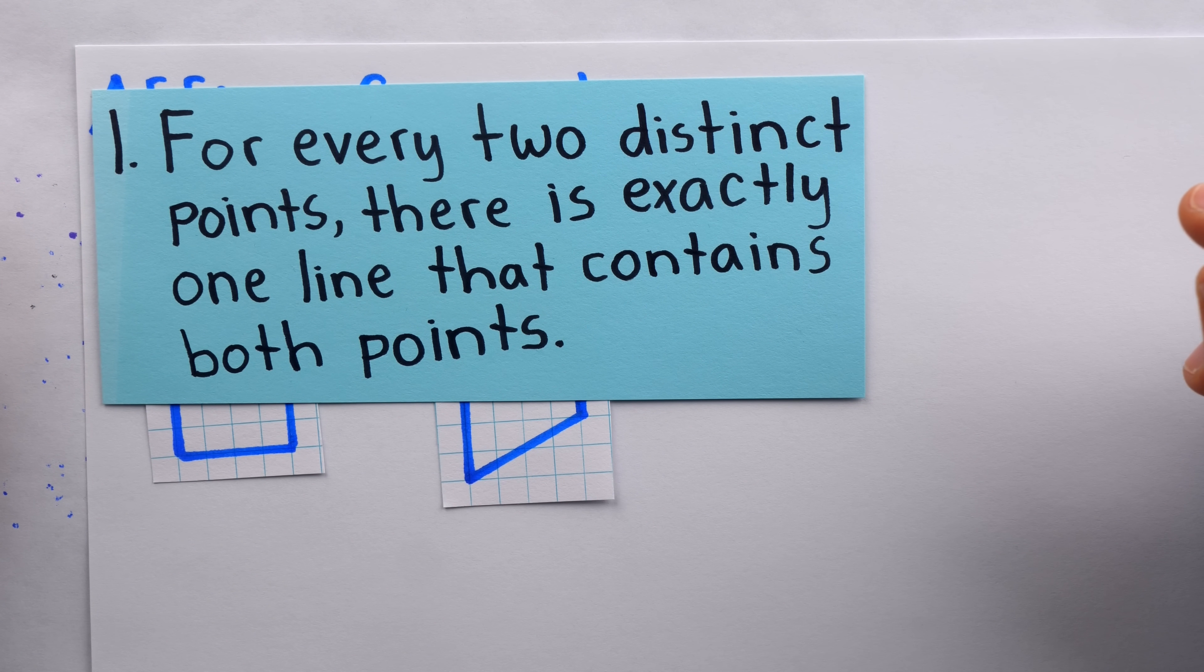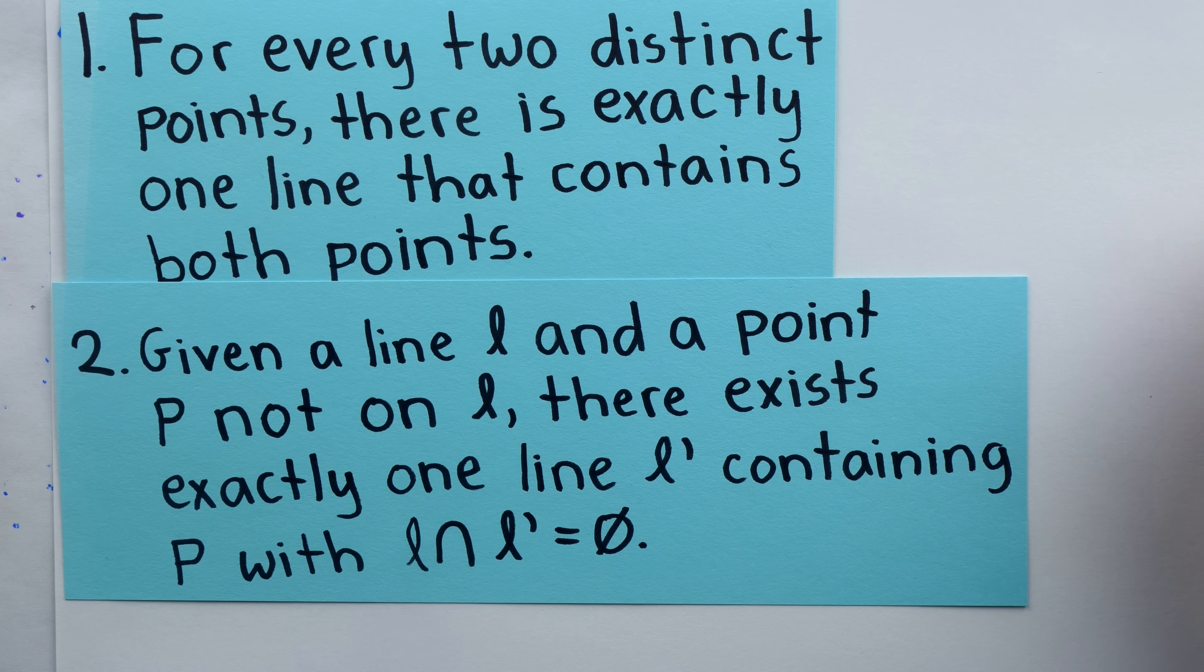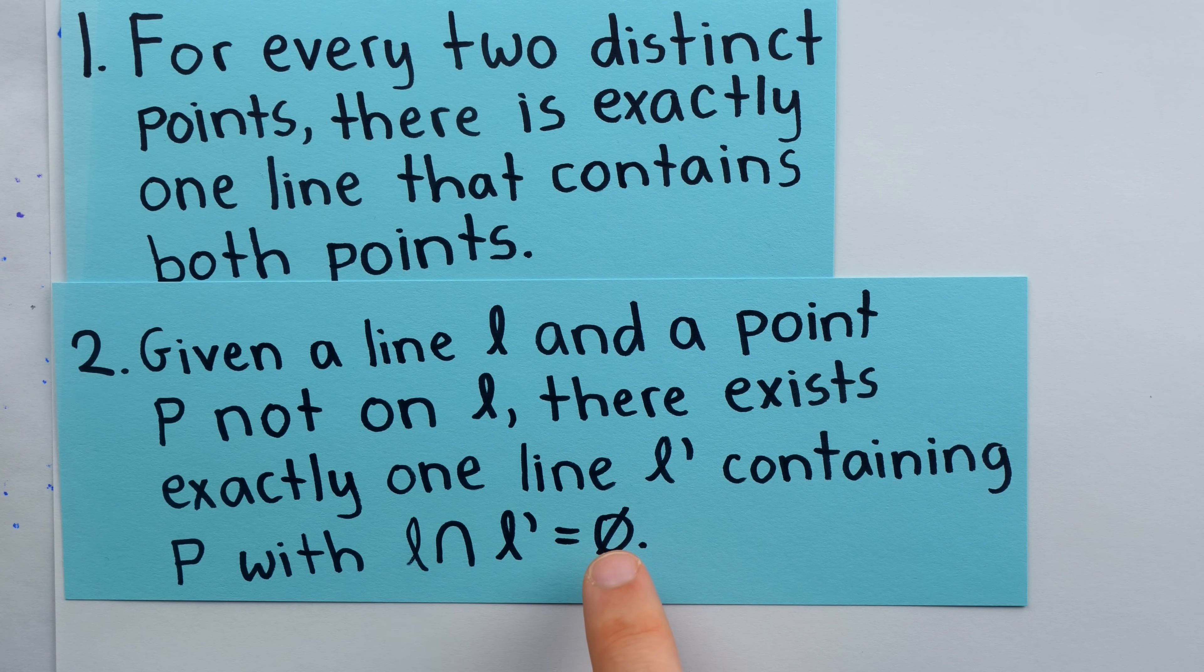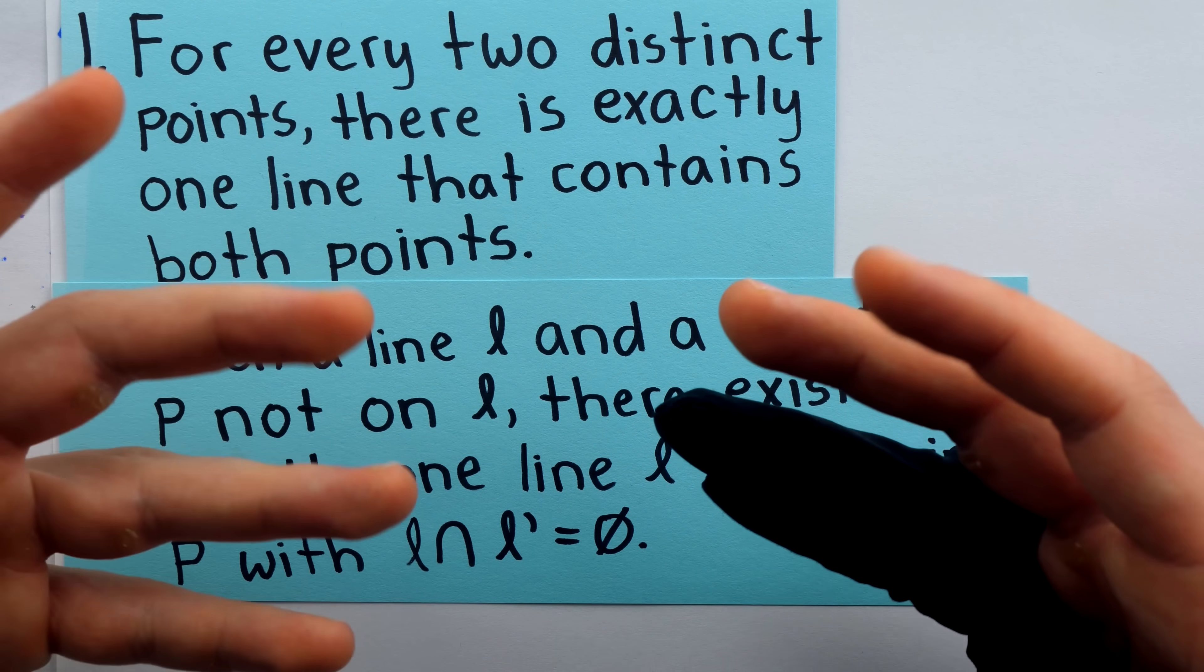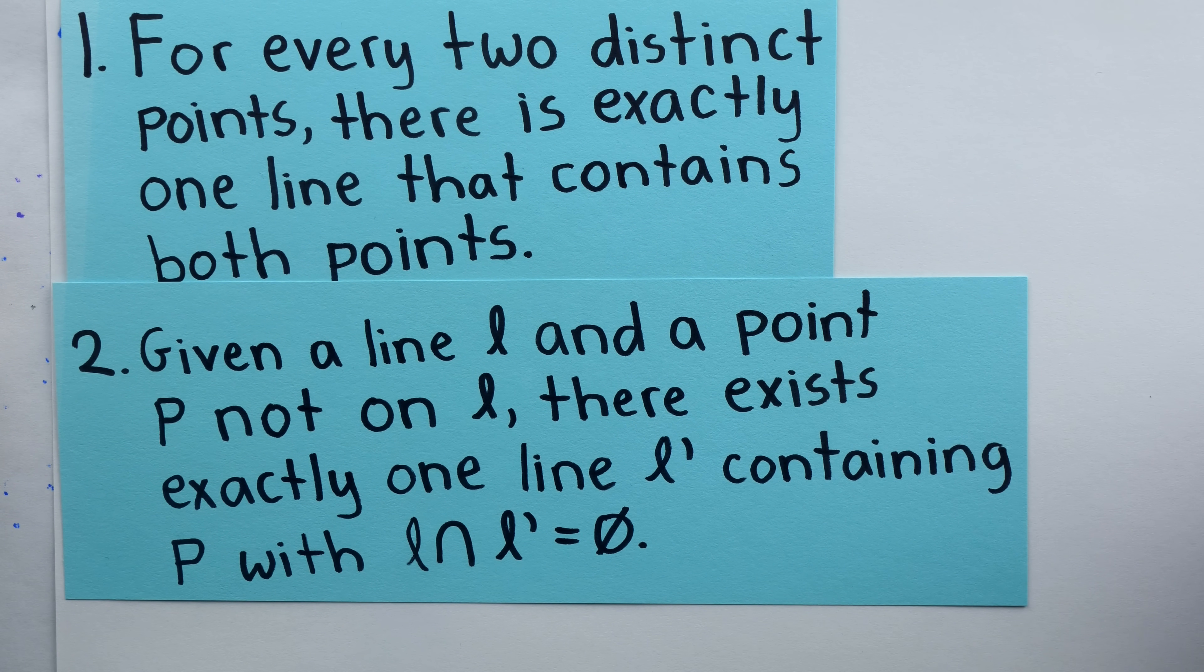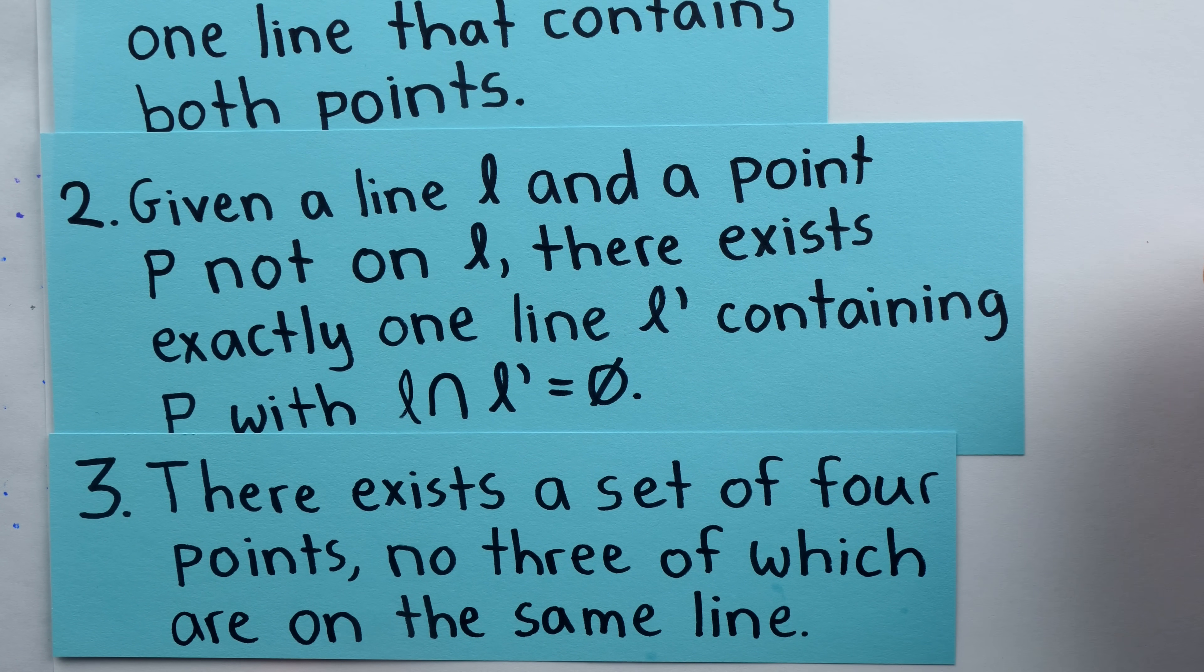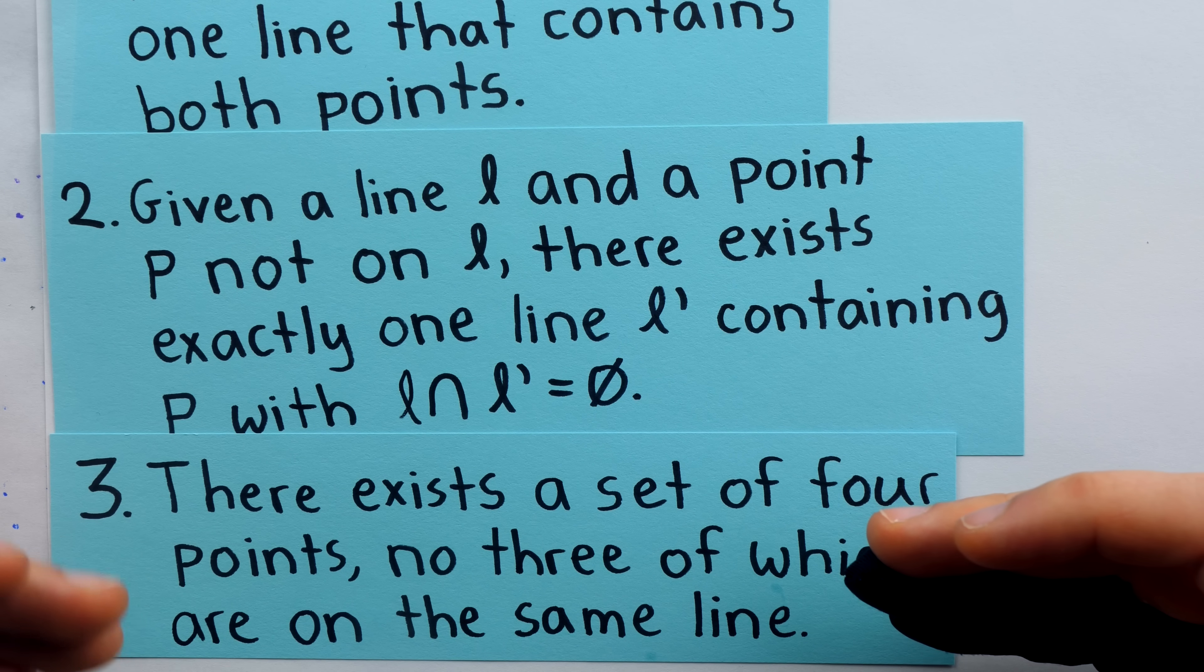So now let's look at the axioms for affine geometry. Axiom 1. For every two distinct points, there is exactly one line that contains both points. Axiom 2. Given a line L and a point P not on L, there exists exactly one line L' containing P that does not have a point in common with L. So the intersection of those lines is the empty set, they don't share a point. This is Playfair's axiom, which is a familiar form of Euclid's parallel postulate. It's often the one you would be taught in school, that a point not on a line has exactly one line through it parallel to the given line. And then Axiom 3, which just guarantees we're not in a completely trivial geometry, there exists a set of four points, no three of which are on the same line.